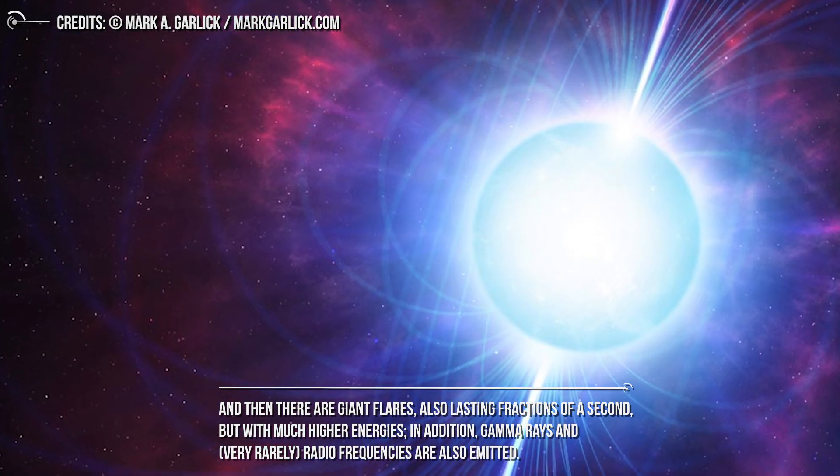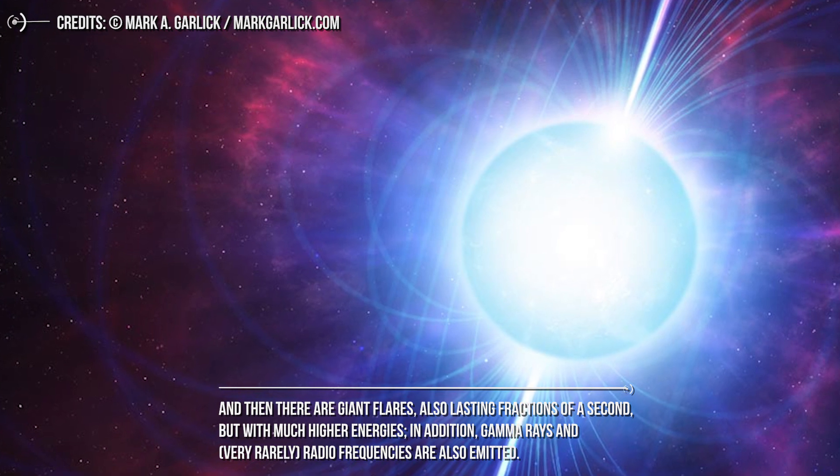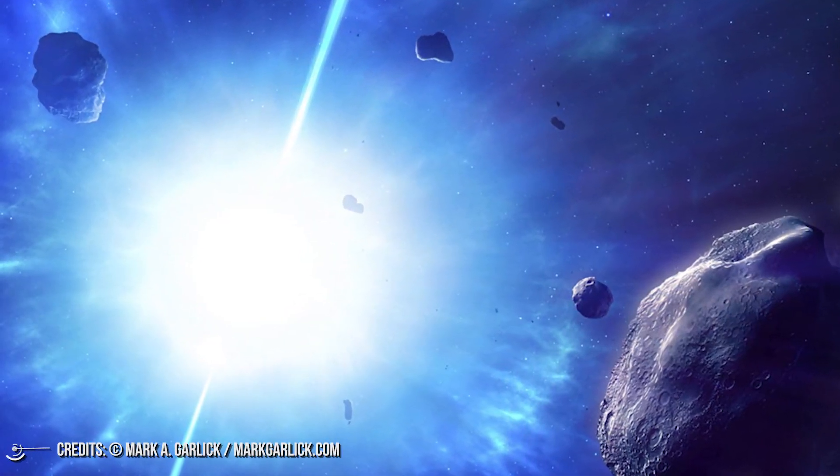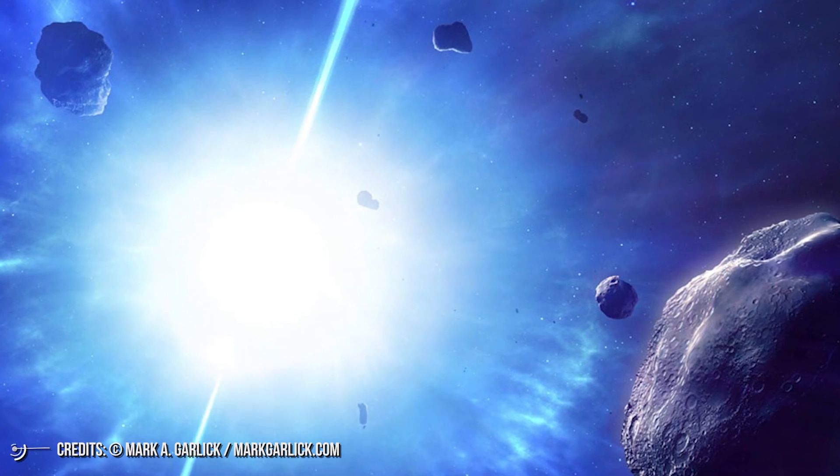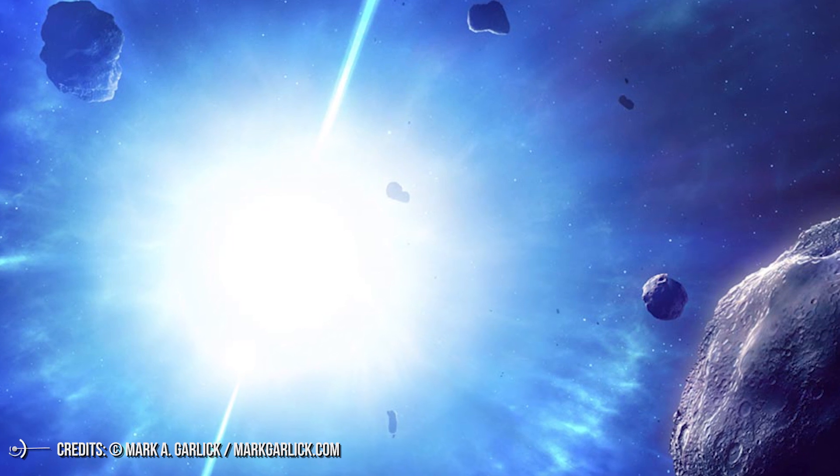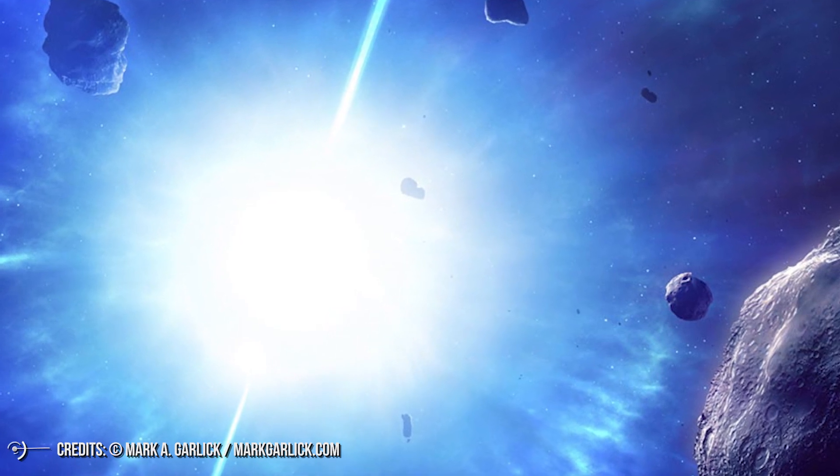In addition, gamma rays and very rarely radio frequencies are also emitted. About 1 in 10 supernovae are believed to degenerate into a magnetar rather than a more common neutron star or pulsar. It happens when the star already has a fast spin and strong magnetism.